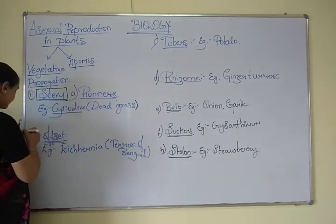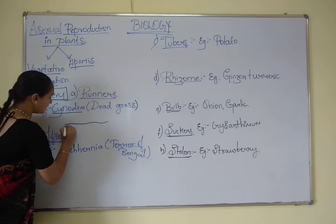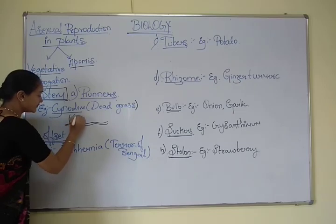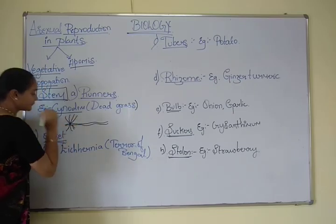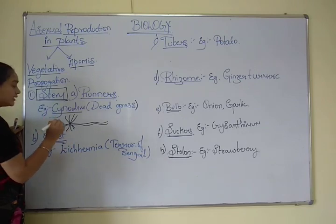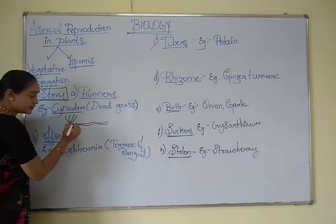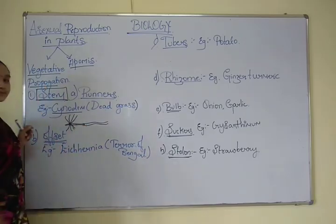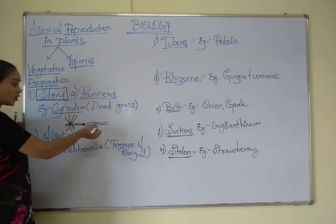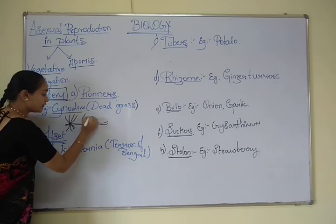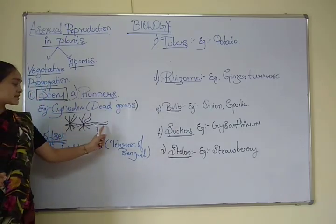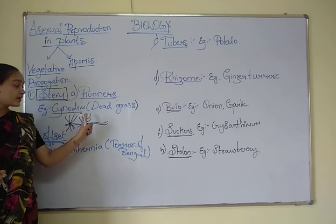Here in the diagram, this is the stem part of Cynodon, which has leaflets and roots. The stem has nodes and internodes. When the node part comes into contact with the soil, it will develop into a new plant.